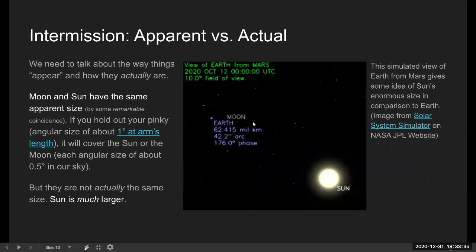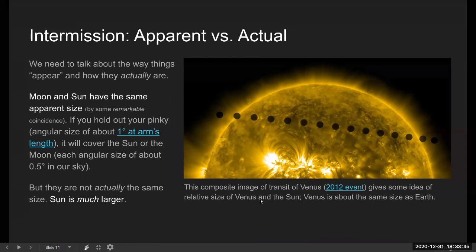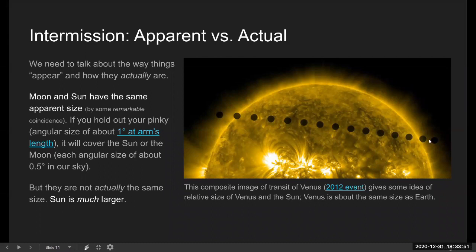And this is just pointing out the huge actual size of the sun. And this is a composite image from NASA from the transit of Venus. By transit, they mean Venus is passing through our view of the sun. So this is kind of like a solar eclipse in that Venus is eclipsing part of the sun, but it's such a tiny part. And if you know that the size of Venus is very similar to the size of the Earth, this allows you to see just how much bigger sun is compared to the planet.